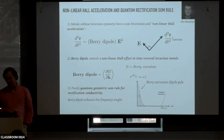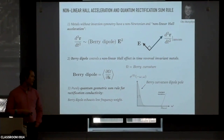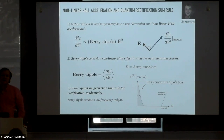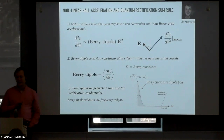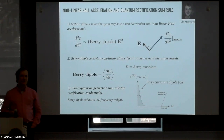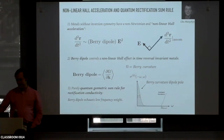I'll present a remarkable sum rule that we found for the rectification conductivity of time-reversal invariant materials. Basically, if you take the rectification conductivity and integrate it over frequency, you get a quantity that depends only on the Berry connection of the bands—it's completely independent of band energies. This is why we call it a quantum geometric sum rule. The net rectification spectral weight is a purely quantum geometric quantity for time-reversal invariant materials.